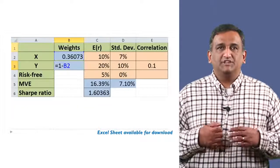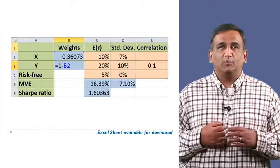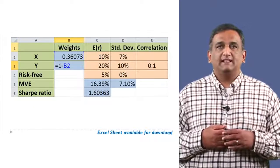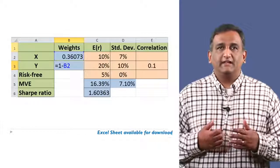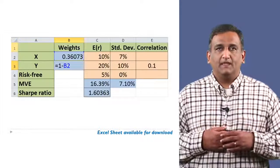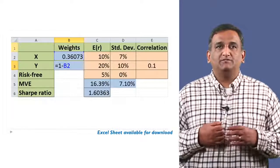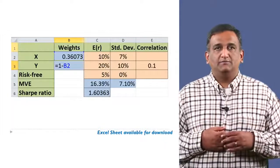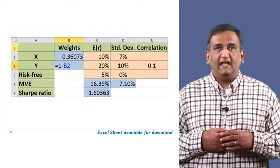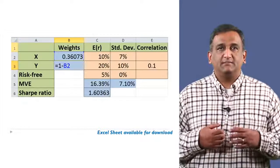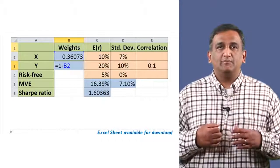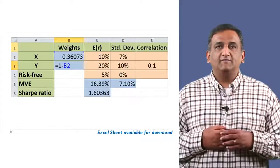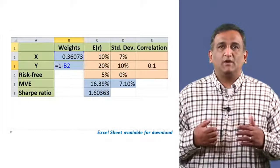You will see that B2 now shows a value of 0.3607. To calculate the weight of Y in the portfolio, in cell B3 enter the formula equals 1 minus B2 — cell B3 will display a value of 0.6393. So the weight of X in the MVE portfolio is 36.07% and that of Y is 63.93%. The Sharpe ratio of the MVE portfolio is 1.60%, meaning for every 1% in risk, the MVE portfolio gives an excess return of 1.60%.